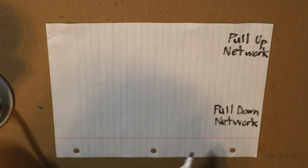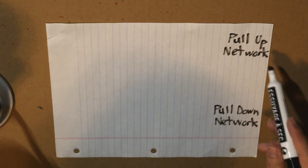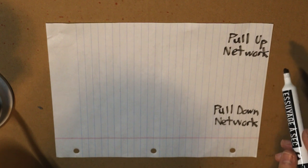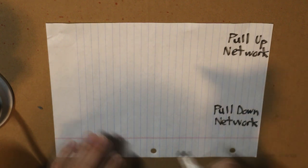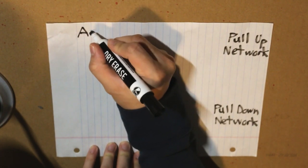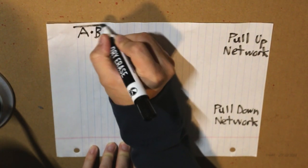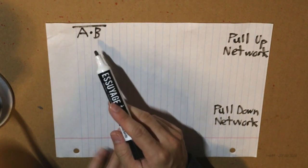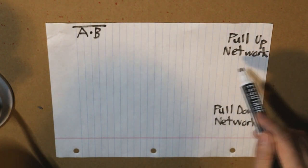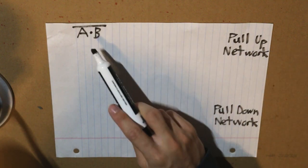Now, since we have identified both of these networks, let's create the equivalent of the NAND gate. What we know is the NAND gate formula. Let's convert it to our pull-up network, so our pull-up network would simply be the inverse of this.